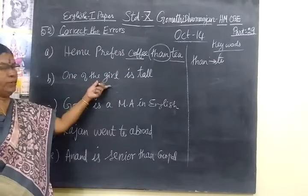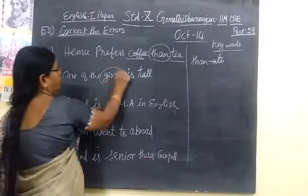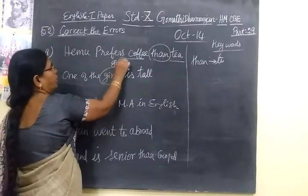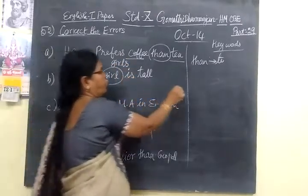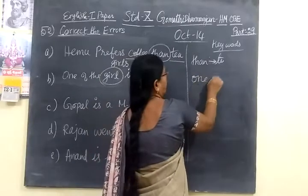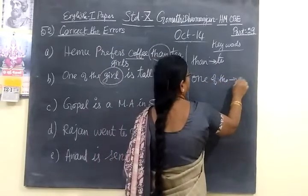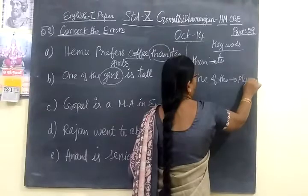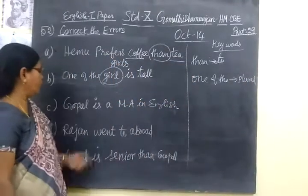'One of the' — we have seen this many times. Instead of 'girl,' you have to write 'girls.' Plural form only. The keyword is 'one of the' — whenever you see 'one of the,' the following noun should be in plural form only.